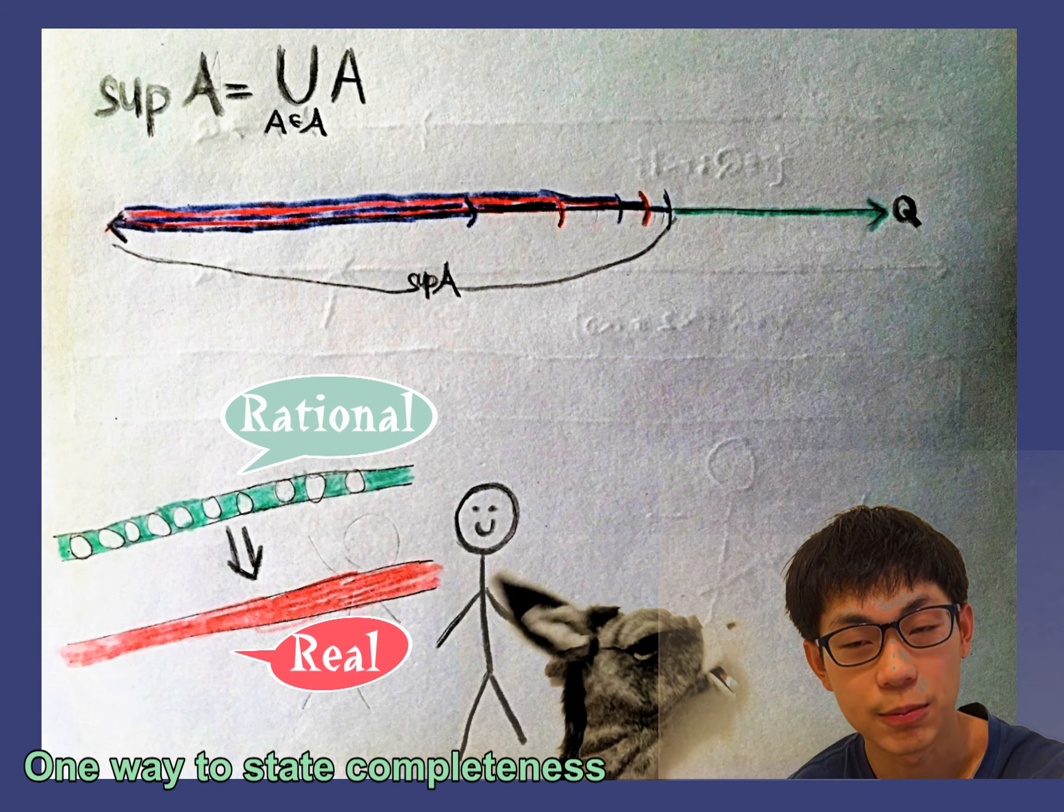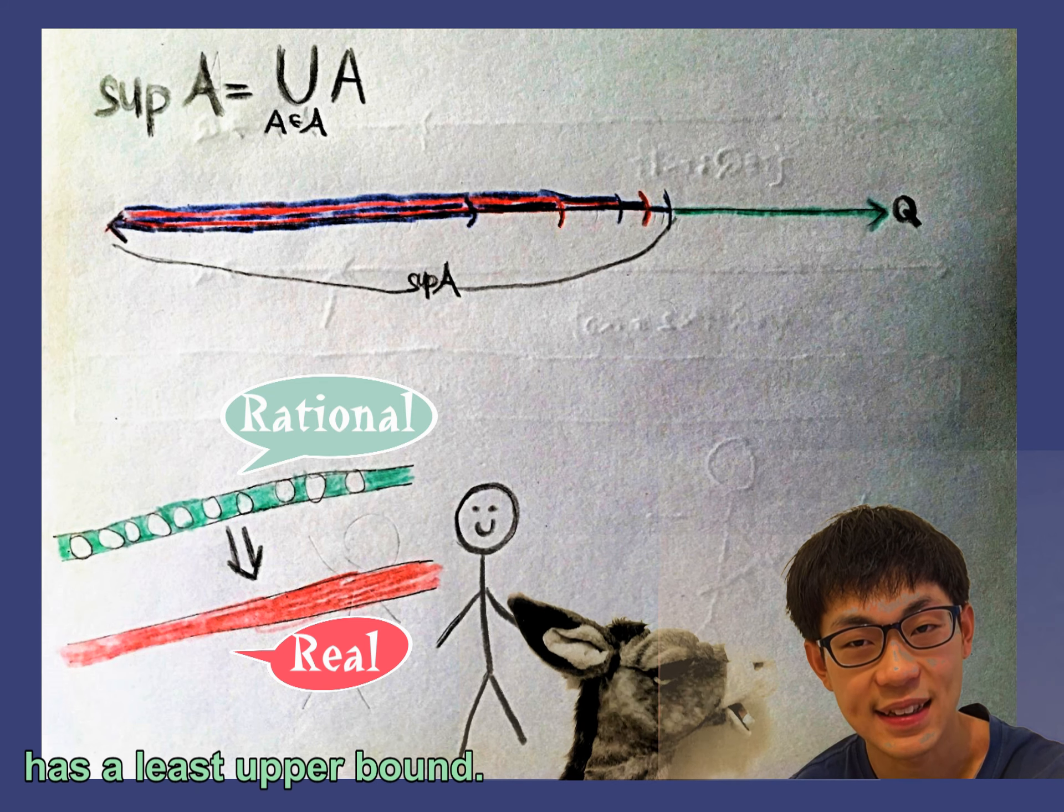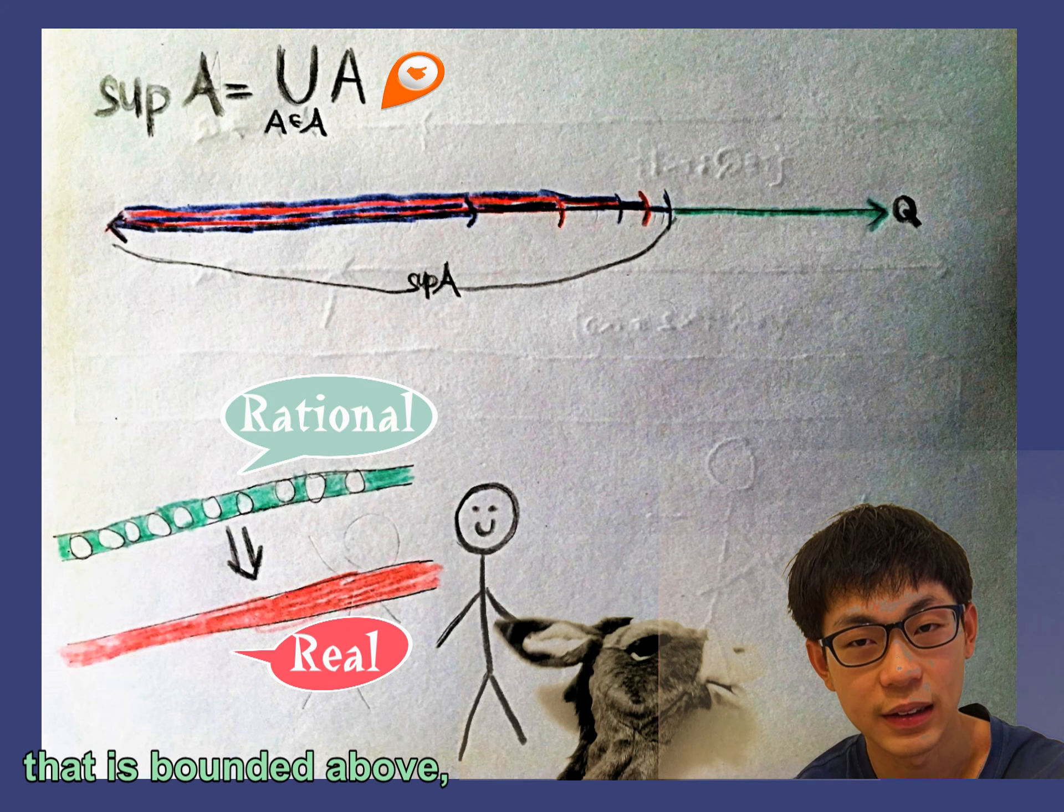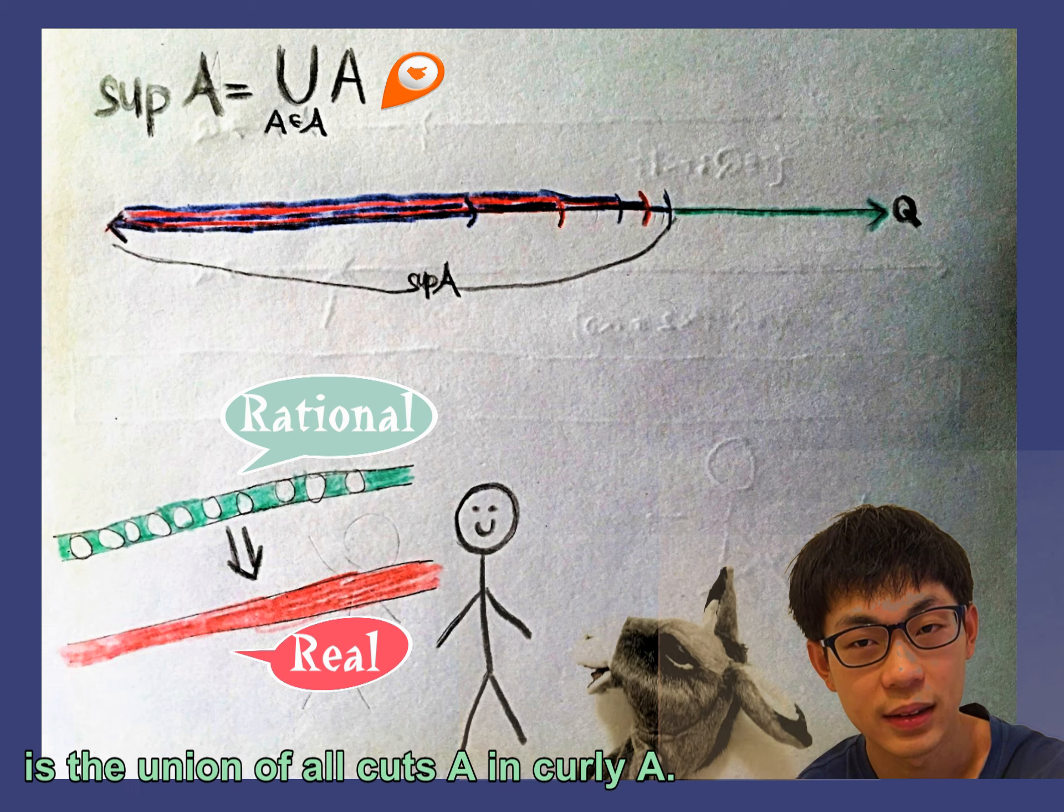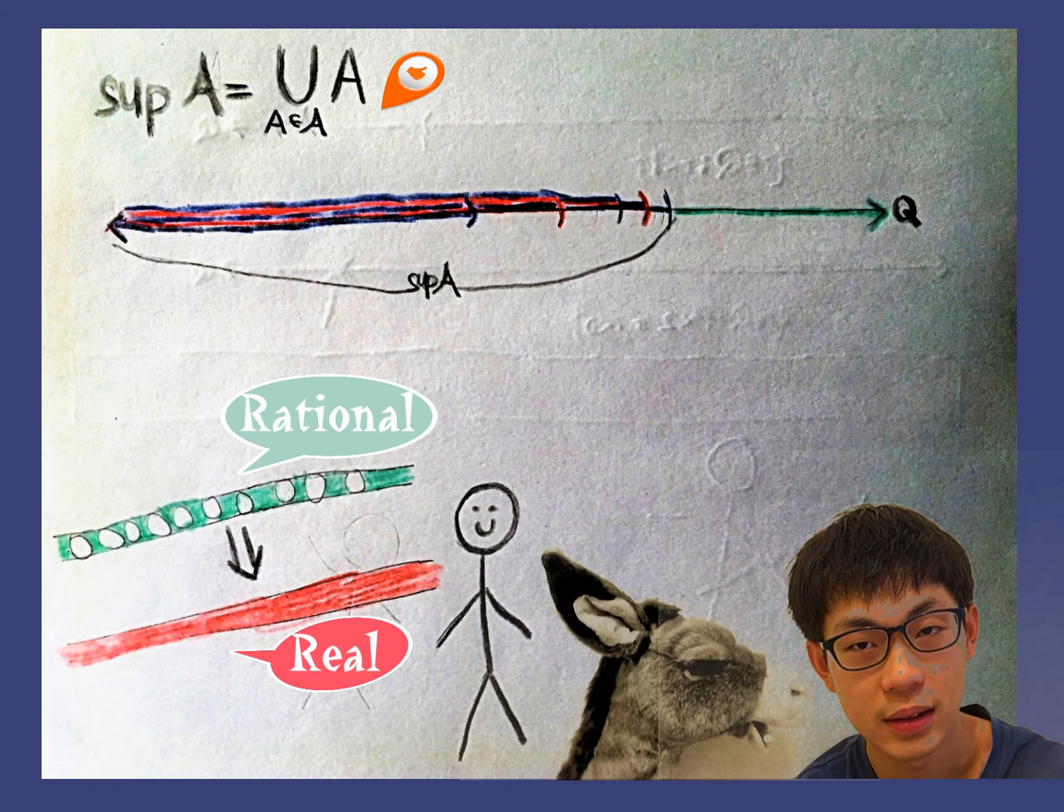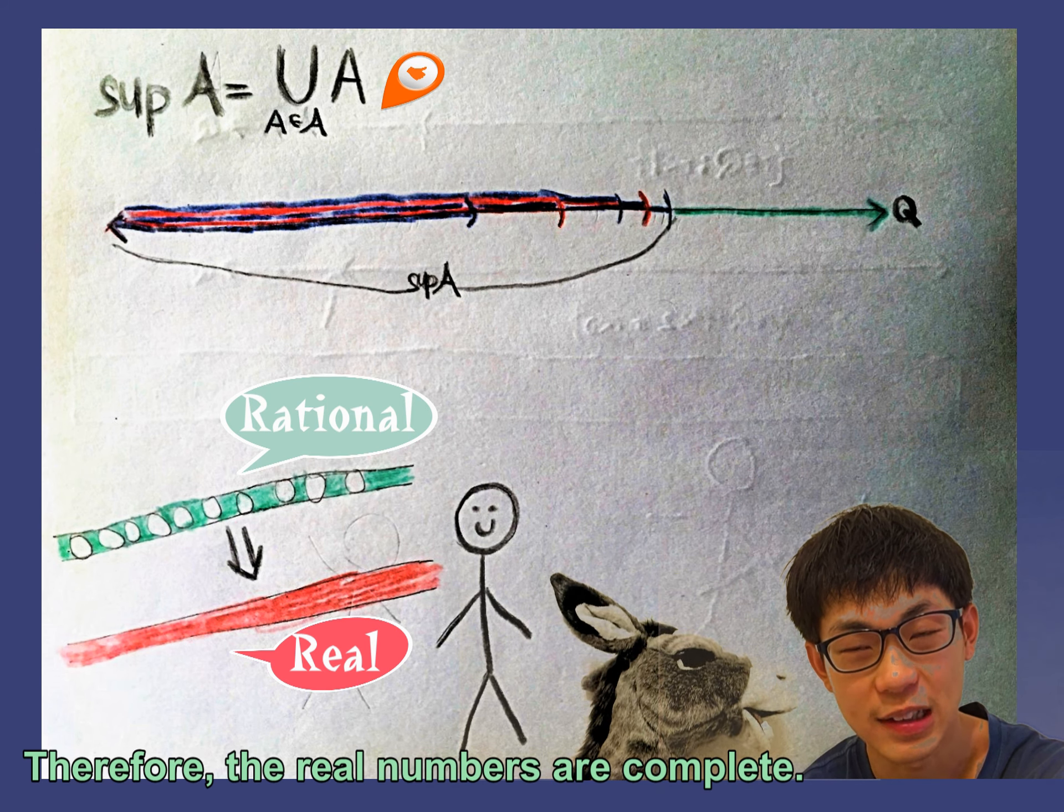One way to state completeness is that every set of real numbers that is bounded above has the least upper bound. Given the set of real numbers curly A that is bounded above, its least upper bound is the union of all cuts A in curly A. This union is also a cut. Therefore, the real numbers are complete.